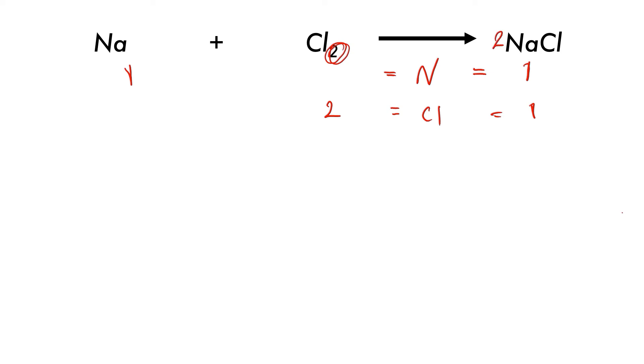So that means we must double the side on the product side. We times that by two and that means we'll end up with two sodiums and two chlorines. So now we have the right number of chlorines on both sides.